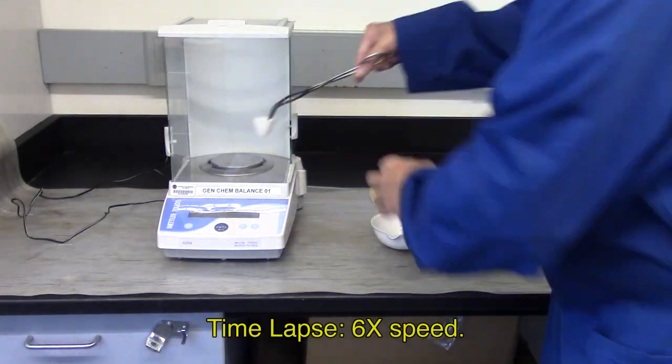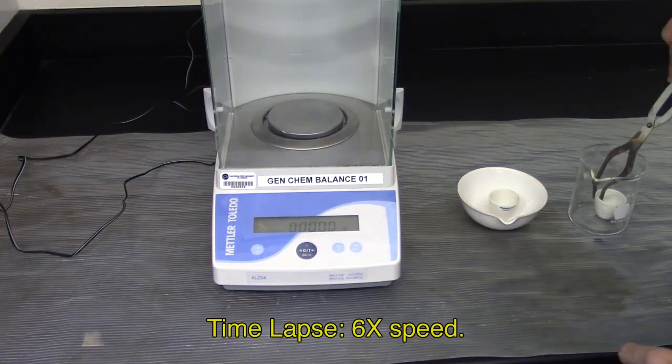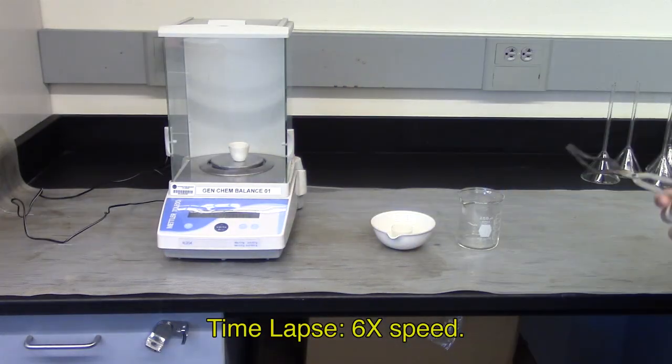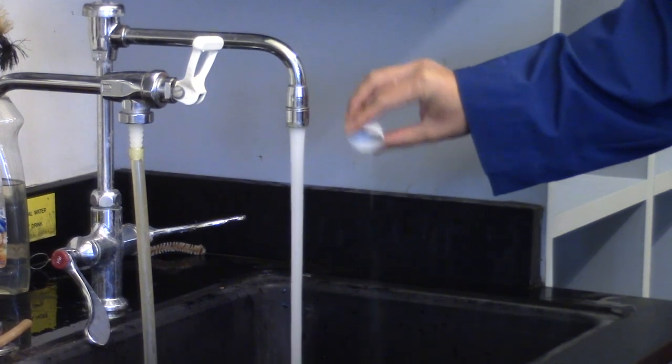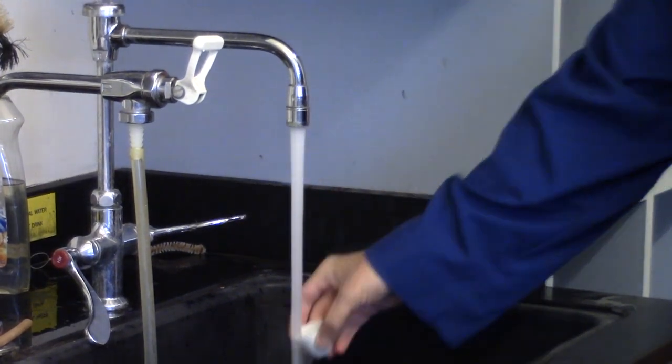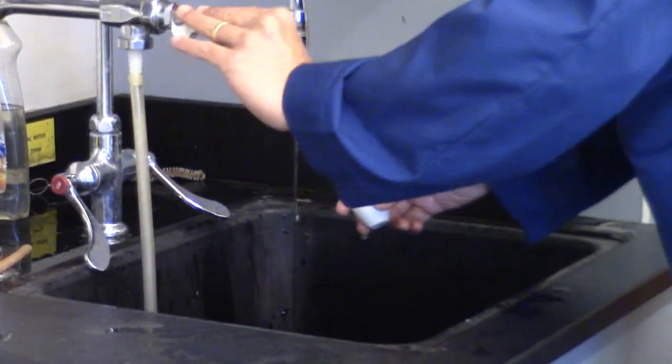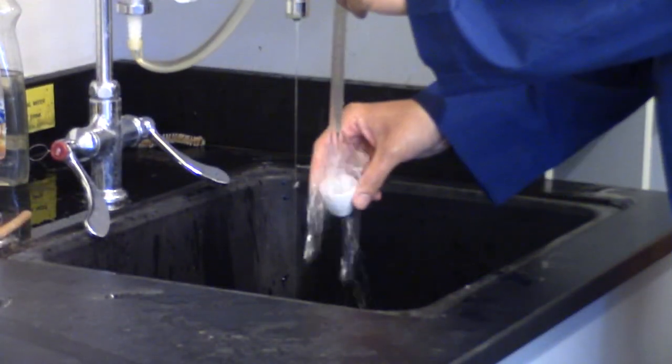Once crucibles are cool enough, weigh each on the same analytical balance. Record the masses. The samples may be disposed of down the drain. Rinse out crucibles well with distilled water.